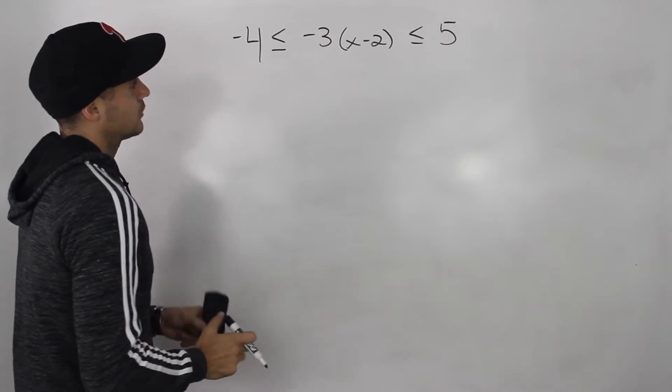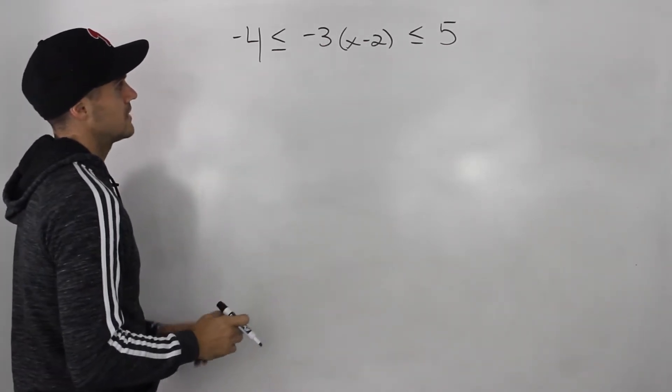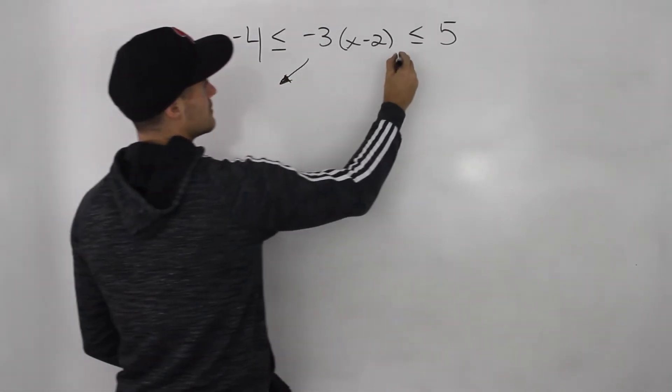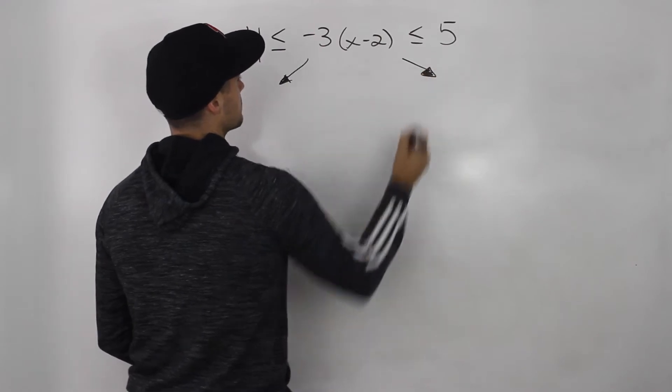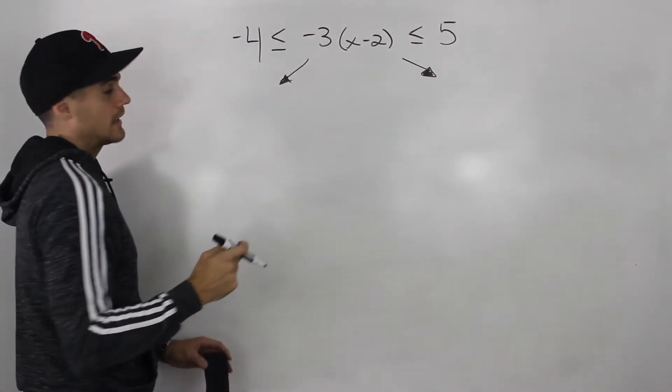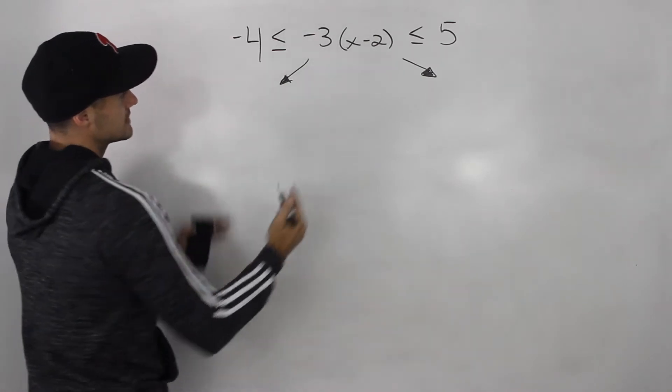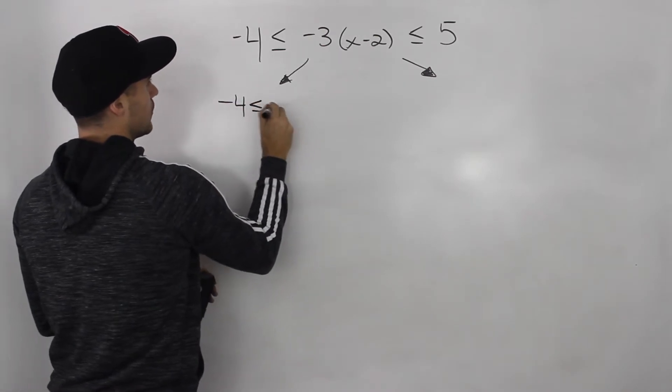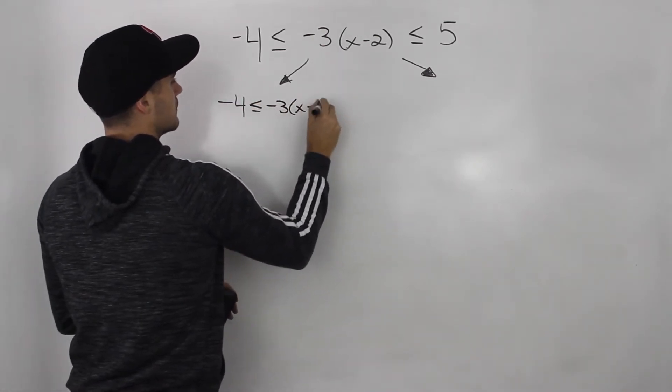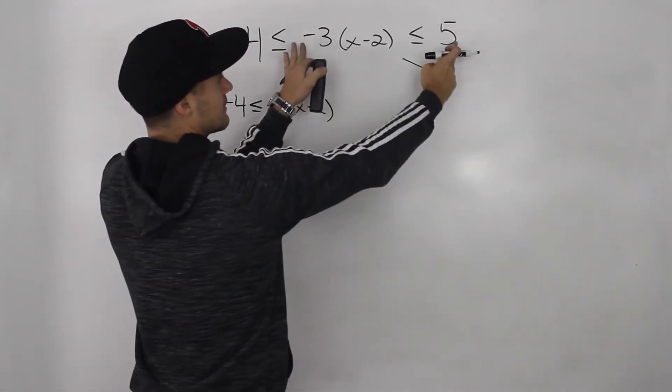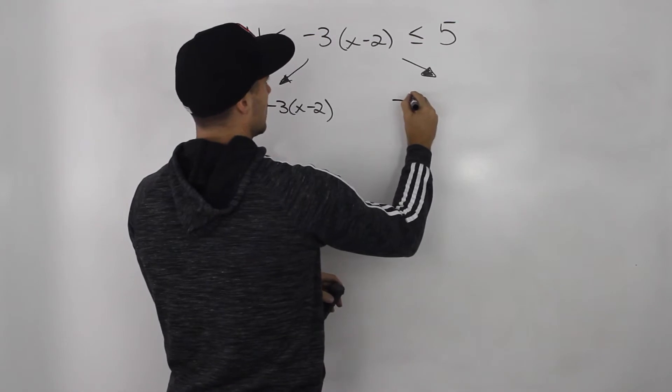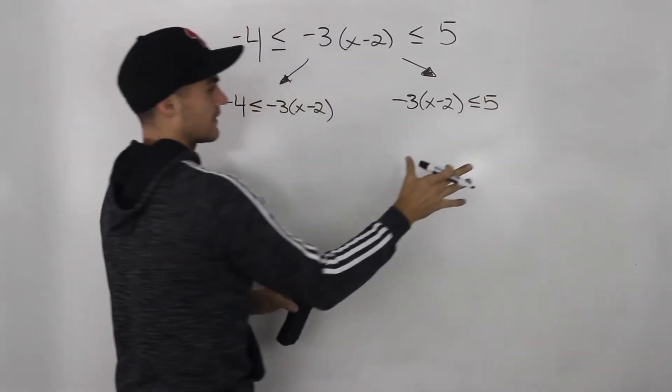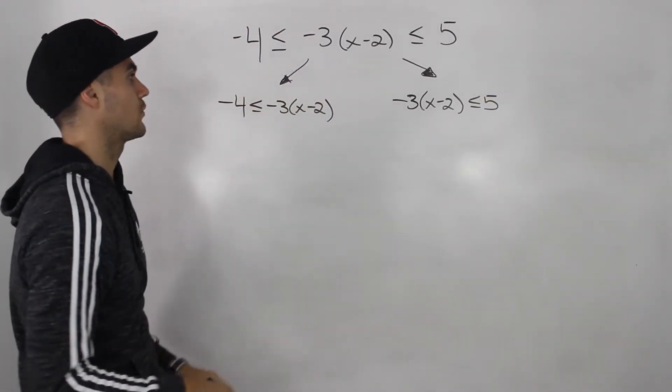So these double inequalities, they're a little bit more complex but not too bad. Basically what I like to do, you don't have to do it this way, there's multiple ways to do it. But the way I like to do it, I like to split it up into two cases. So I like to take this as a single inequality, solve that, and then I like to take this single inequality and then solve that, and then combine the solutions for both of those.